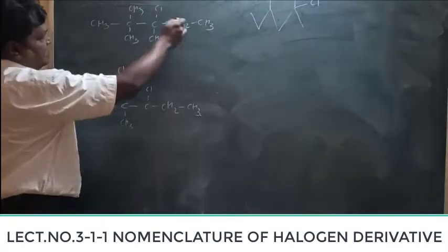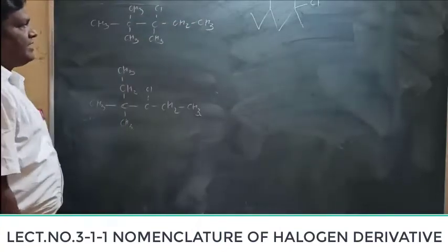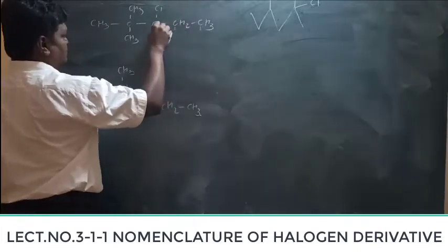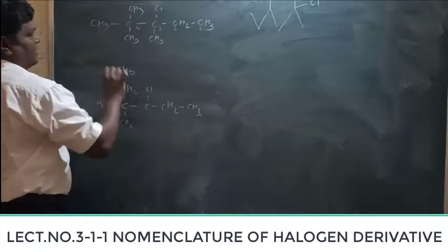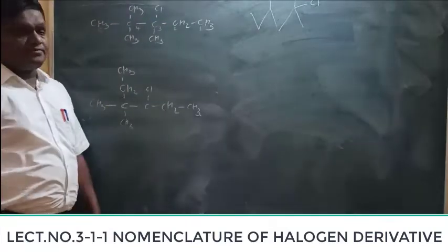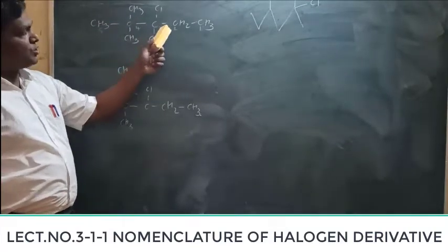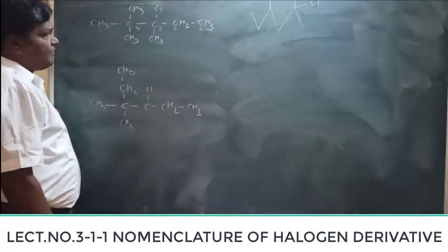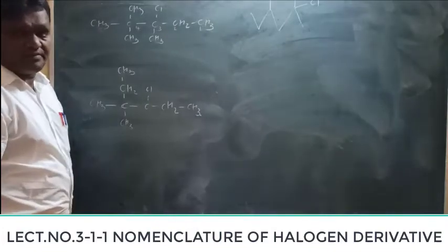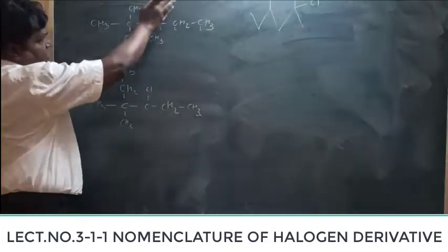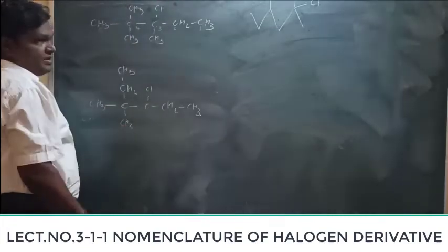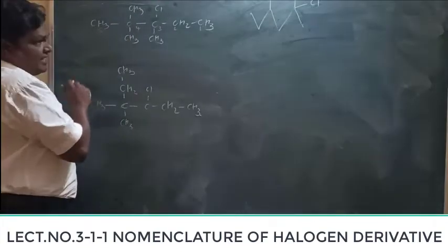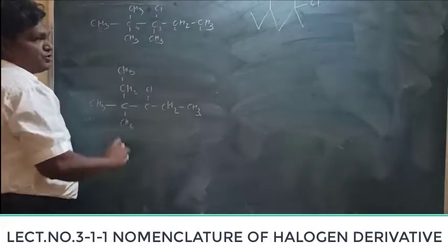Now for the bond-line structure example, if you label from the left-hand or right-hand side you find the same number — three — for the halogen. We label from the right-hand side: one, two, three, four, five. Labeling from the right-hand side, the chlorine atom acquires the lowest possible number, which is three. If you label from the left-hand side, this methyl group gets number two.